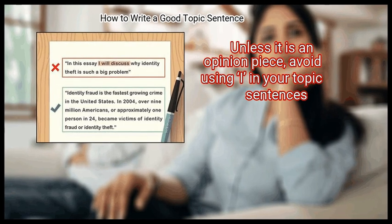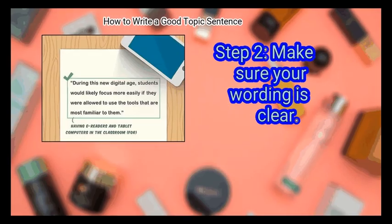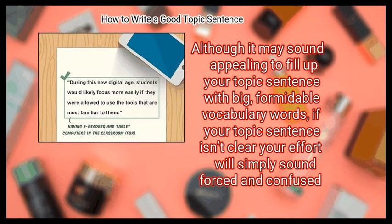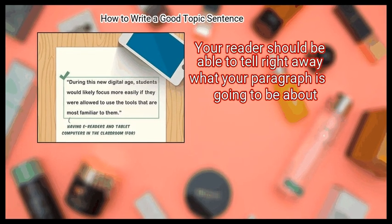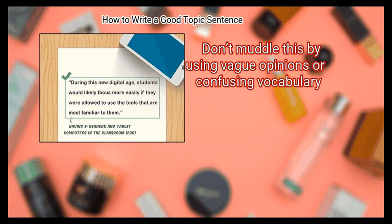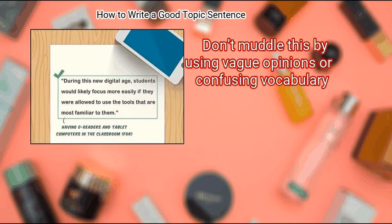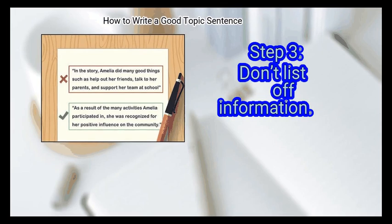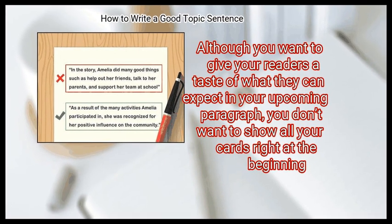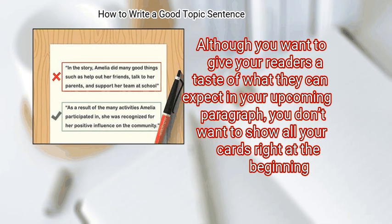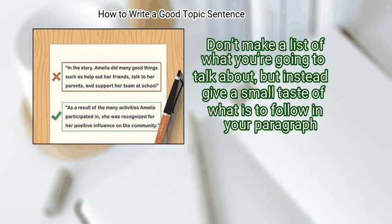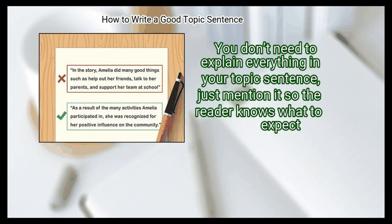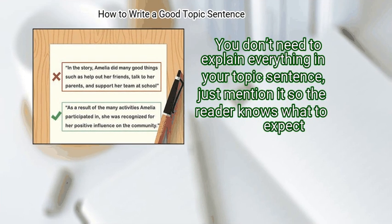Unless it is an opinion piece, avoid using 'I' in your topic sentences. Step 2: Make sure your wording is clear. Although it may sound appealing to fill your topic sentence with formidable vocabulary words, if your topic sentence isn't clear, your effort will simply sound forced and confused. Your reader should be able to tell right away what your paragraph is going to be about. Step 3: Don't list off information. You don't want to show all your cards right at the beginning — give a small taste of what is to follow.